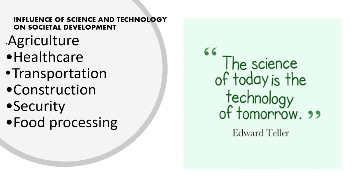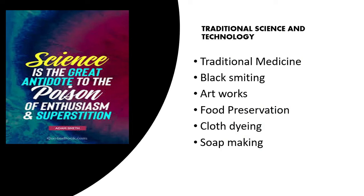Because science and technology has come to stay, we also have traditional science and technology. In terms of traditional medicine, in the olden days our people were able to identify herbs — like the bark of trees and roots — and use them to cure sicknesses and diseases. When a child was sick, they would take the child to an elder who would walk to the backyard, pluck the bark of a tree, boil it with other leaves, and give it to the child. Once the child took a little of it, the sickness would disappear.